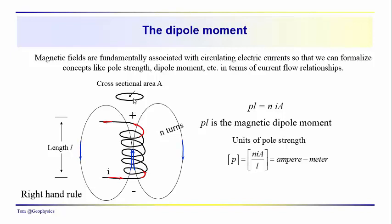Additional quantities associated with the coil are the cross-sectional area — looking downward on this coil we would see a circle of cross-sectional area A — and the length of the coil is represented by L. So we have a quantity referred to as the dipole moment, which is just the product of the pole strength times the length of the coil, and that is equal to the number of turns times the current flowing through the coil times the cross-sectional area.